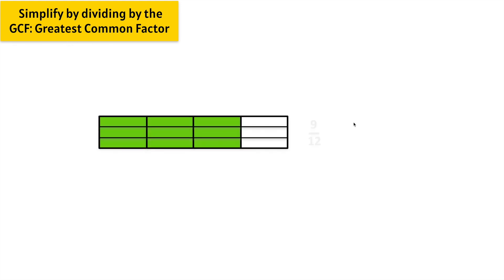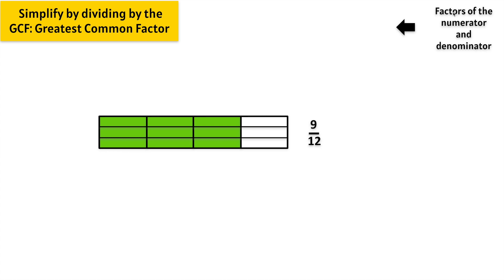Let's simplify 9 twelfths. We have 12 equal parts and 9 of them are shaded, which makes 9 twelfths. In order to simplify 9 twelfths, we need the factors of the numerator and denominator. We know the numerator is 9 and the denominator is 12, so we need to find the factors that multiply to make 9 and the factors that multiply to make 12.